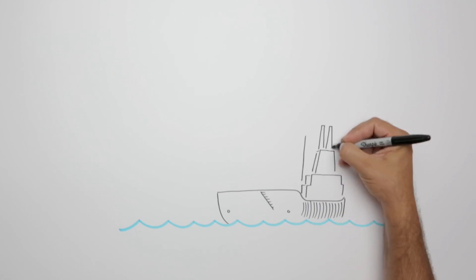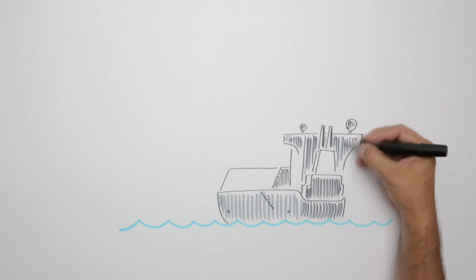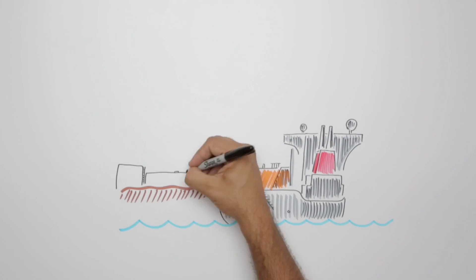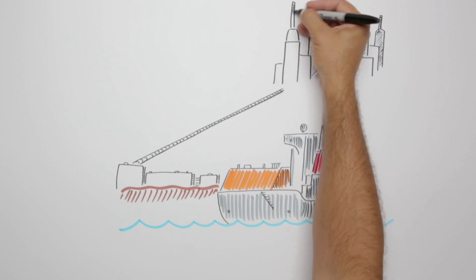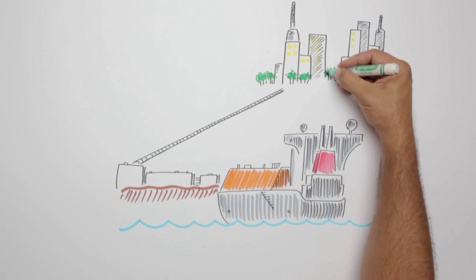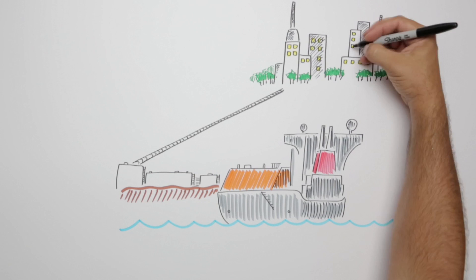Once the LNG arrives overseas, it's piped off the ship into specialized facilities that take the cold liquid and warm it back up to a natural gas, that is then sent to power homes, factories, and vehicles.